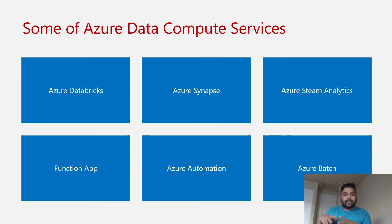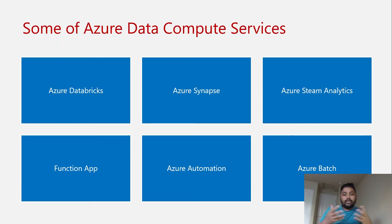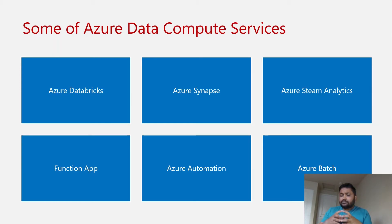Once data is coming in, how do we process it? We have Azure Databricks, which has Spark — you can process all big data workloads on that. We have Azure Synapse, a great service where you can work with SQL, use its built-in Spark engine, work with Python using notebook features, or use Scala. For stream-based compute we have Azure Stream Analytics. For fully platform-as-a-service event-driven compute we can go for Function Apps. We also have Azure Automation and Batch services for different compute needs.